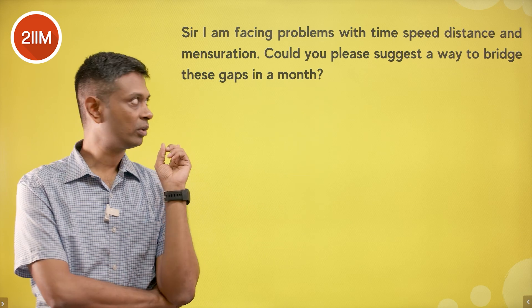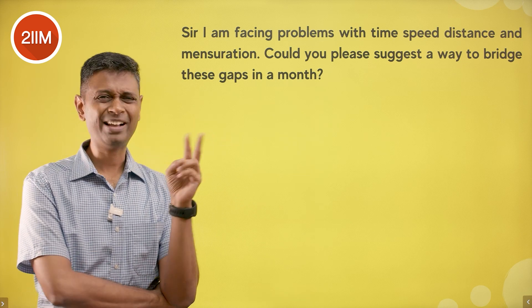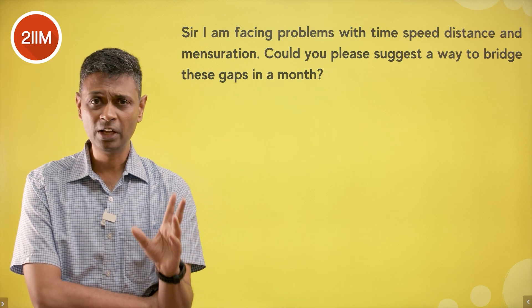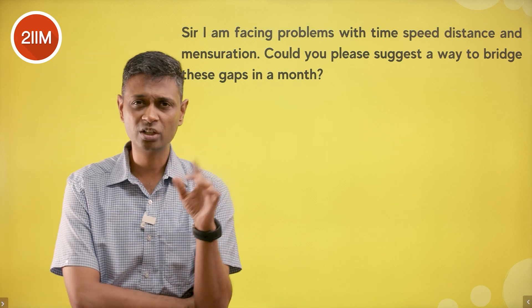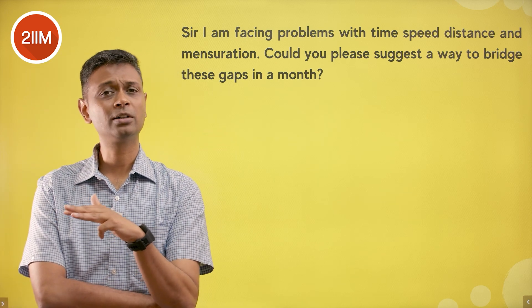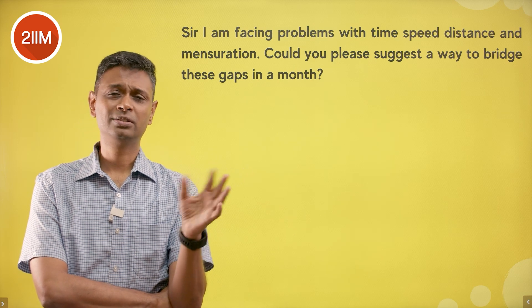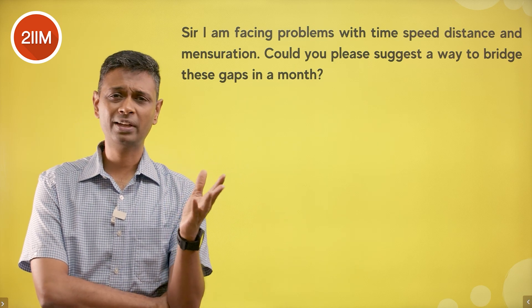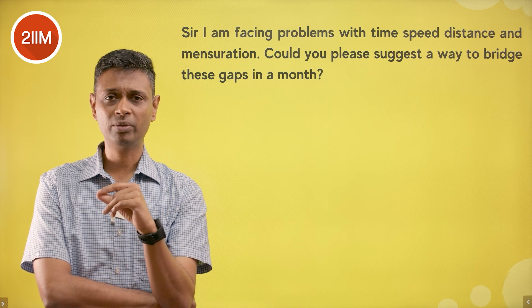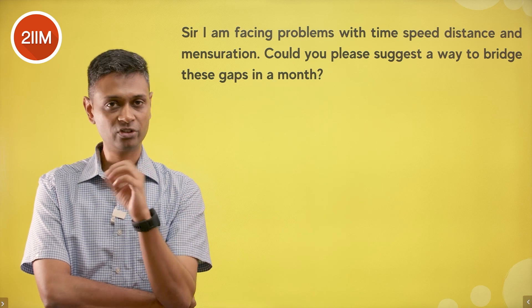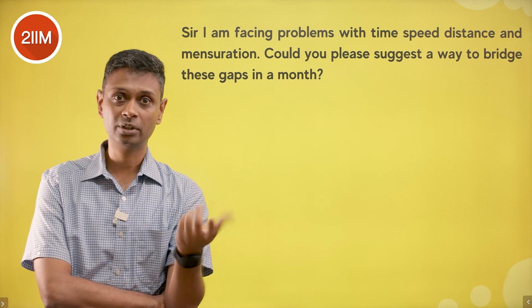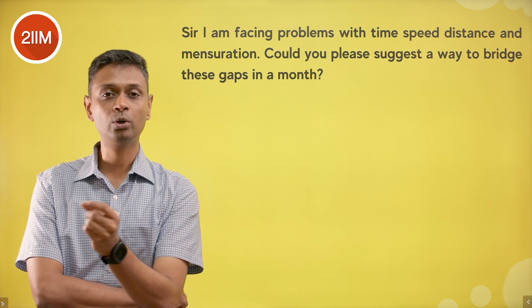We're talking about 24 questions in quant. There will be one from here, one from there — maximum three. You can dump these two topics and still rock this paper. This applies to speed-time-distance, mensuration, coordinate geometry, trigonometry, binomial theorem, pipes and systems, clocks and calendars — any one, two, or three of these you can dump. But you cannot say you don't know how to solve linear equations — that's fundamental.